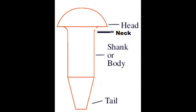Now come to the middle portion. This portion is of cylindrical shape and is known as shank or body.